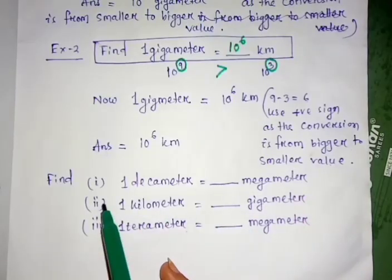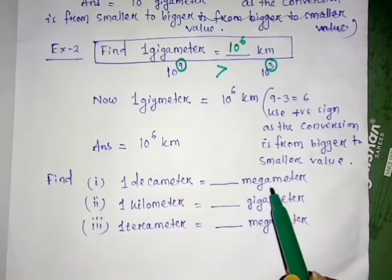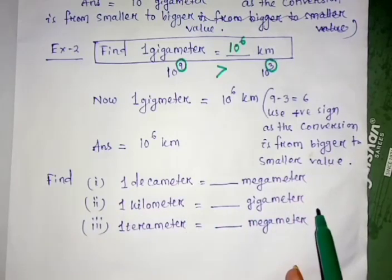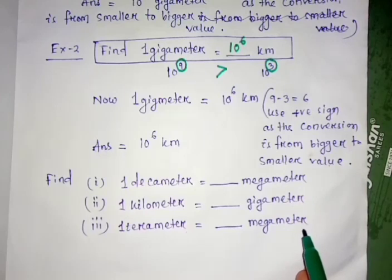I have homework for you. You can try this: 1 decameter equals how much megameter, and 1 kilometer equals how much megameter. Also, find 1 terameter equals how much megameter.